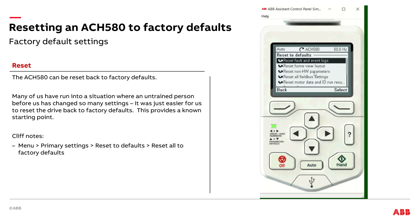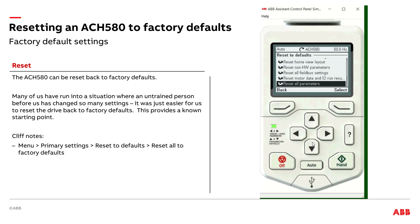We do have a lot of options here based on what exactly you want to have it reset. So maybe it's just the communication settings, the BACnet settings, or maybe it's just the home view — how the drive appears on the main screen. But I'm going to assume that they really got it messed up, so we're going to scroll down and do a reset all to factory defaults.